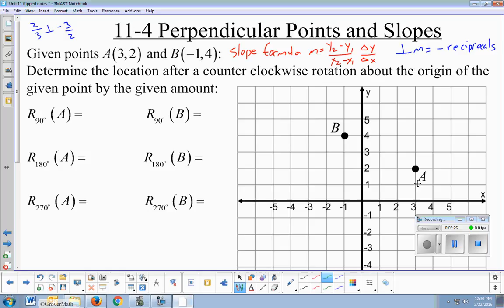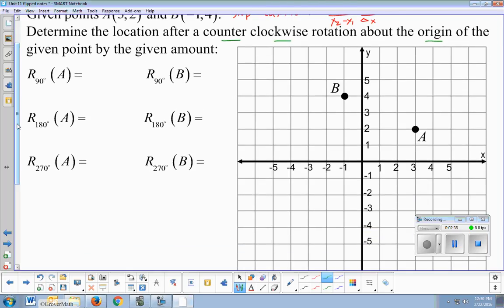So given points A and B, A is the point 3, 2, B is the point negative 1, 4. Determine the location after a counterclockwise rotation about the origin for the given point. We're not working with A and B together right now. For now, just focus on point A, and we're going to rotate around the origin at 90 degrees, 180 degrees, and 270 degrees.